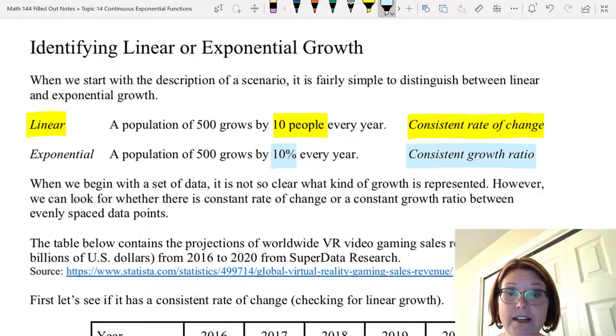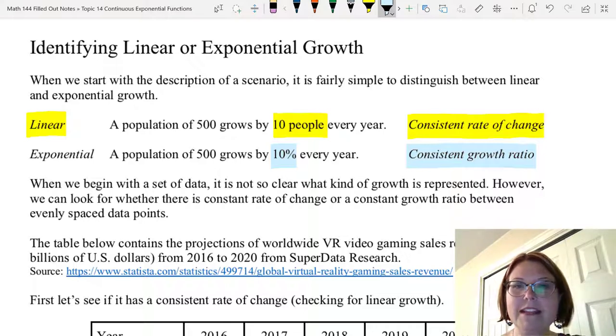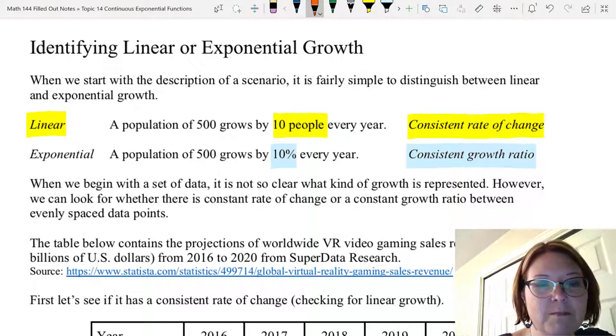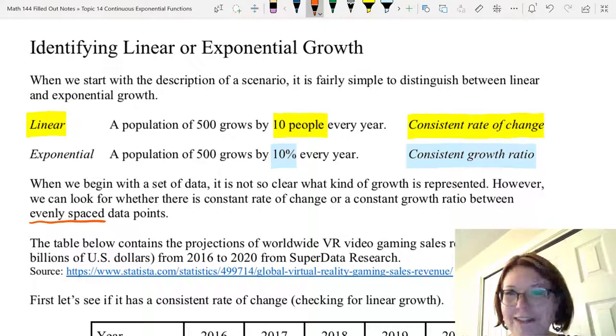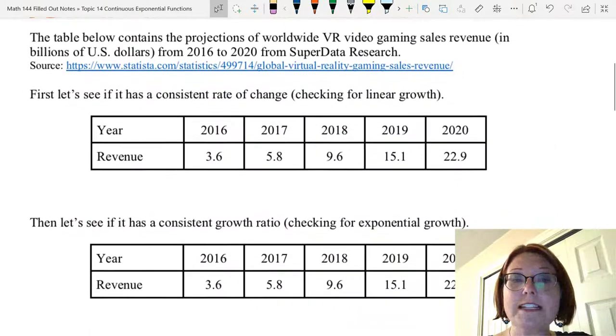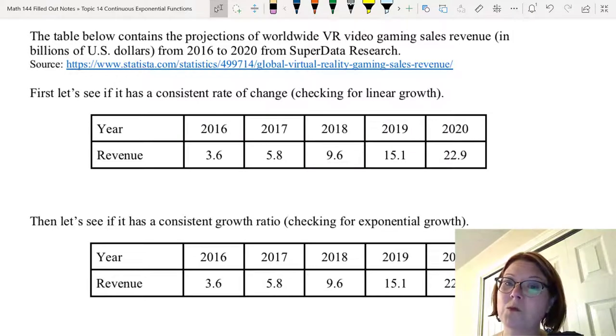So when we begin with a set of data, it's not so clear what kind of growth is represented, but we can look at whether there's either a constant rate of change or a constant growth ratio between evenly spaced data points. And that's relatively important. We do need to pay attention to whether our data points are evenly spaced. So the first example we're going to look at are projections of worldwide VR video gaming sales revenue in billions of US dollars from 2016 to 2020. First let's see if it has a consistent rate of change—in other words, we're checking for linear growth.